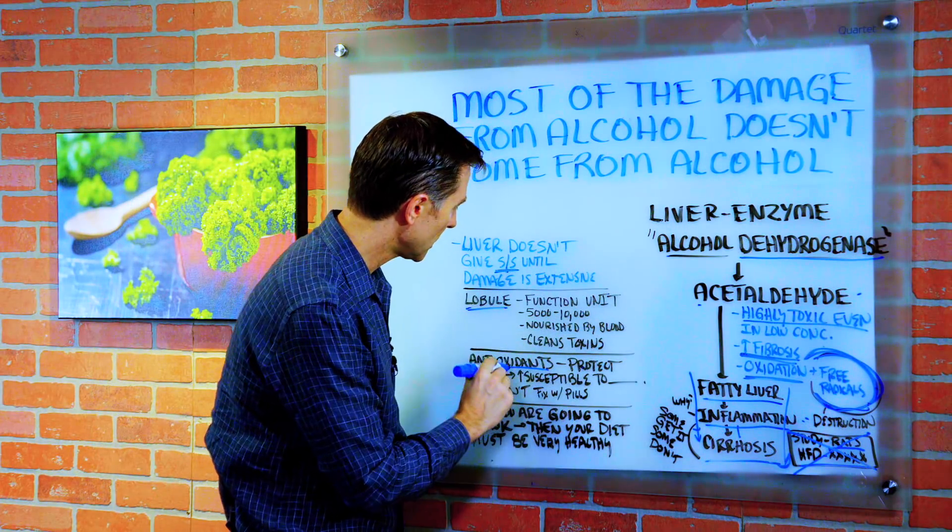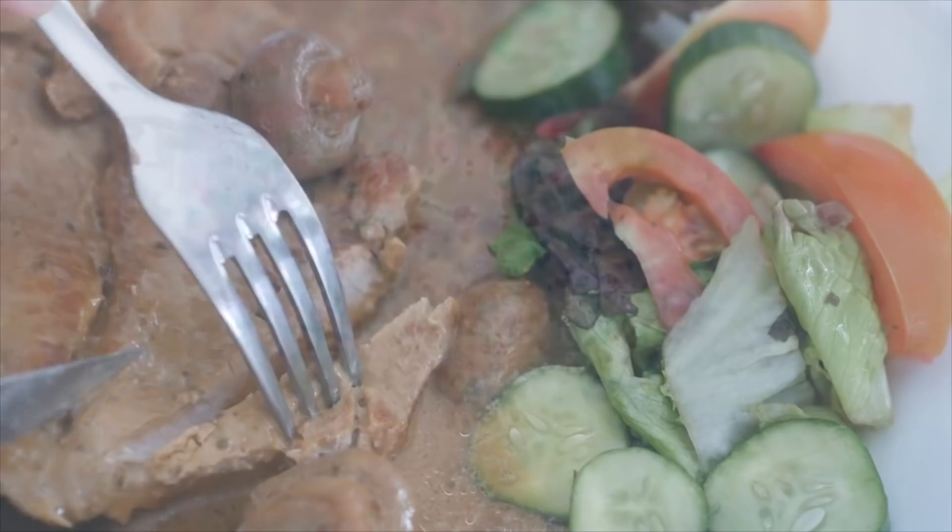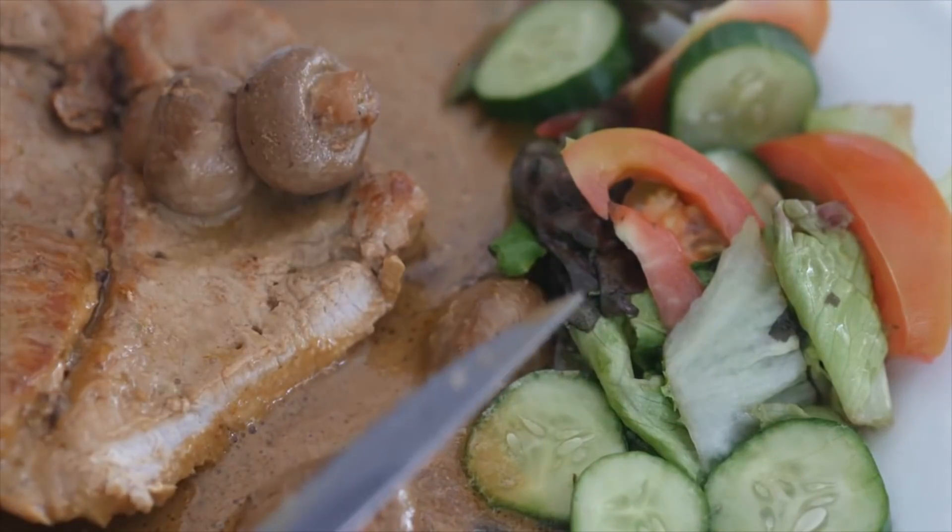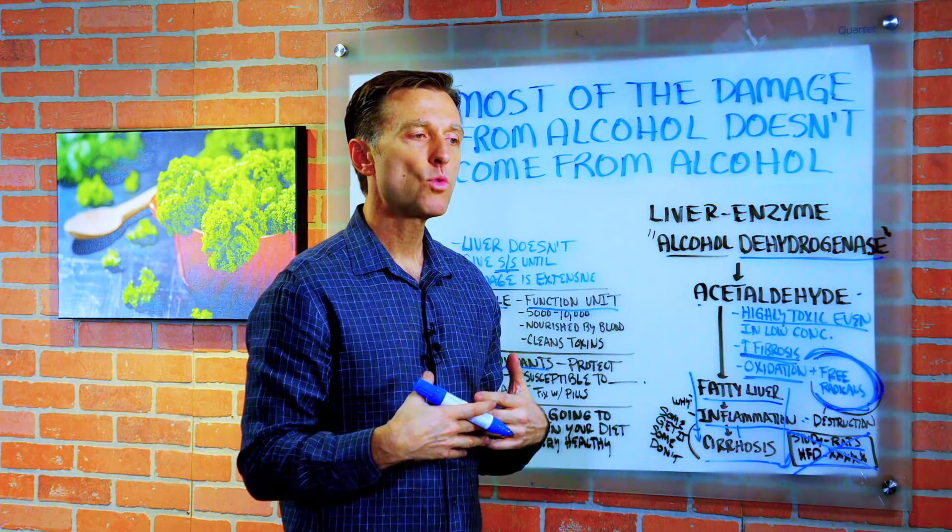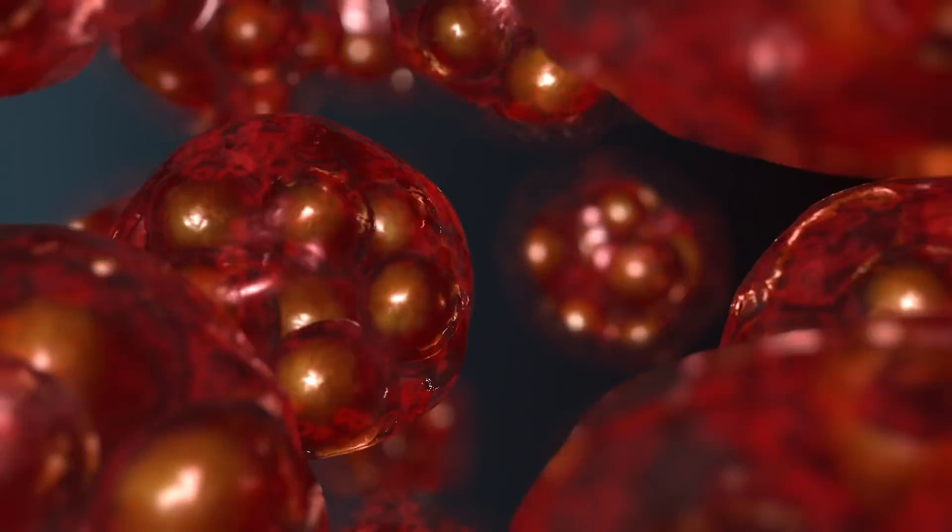So antioxidants have the power to protect these functional units of the liver. Now, your body makes antioxidants and you get antioxidants from your foods. And when you run out of these antioxidants, your cells become more susceptible to the damage.